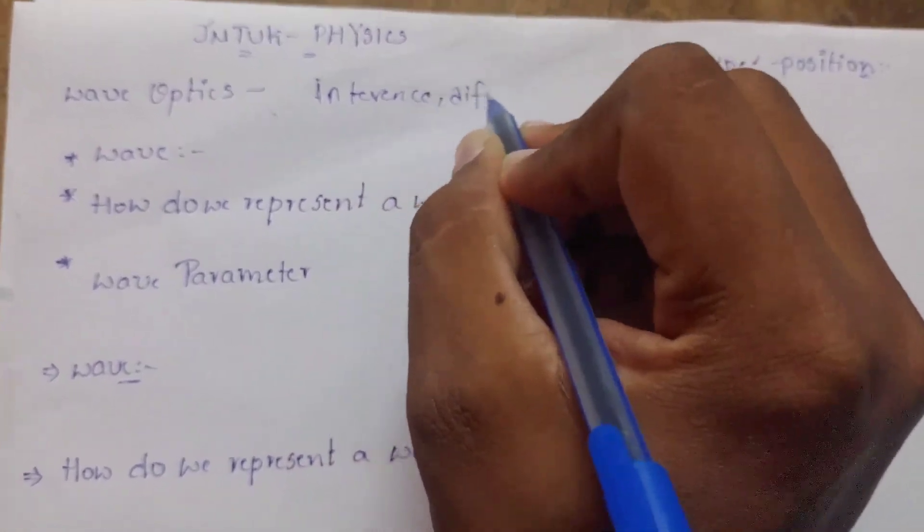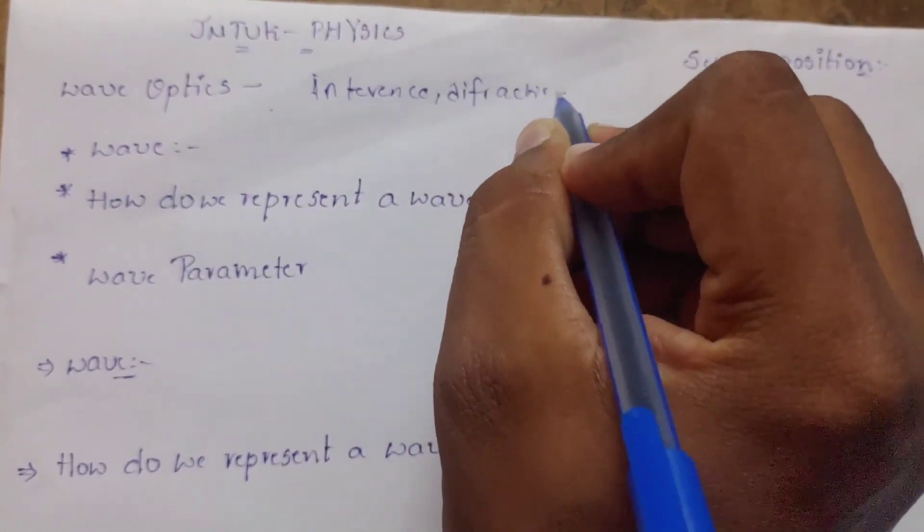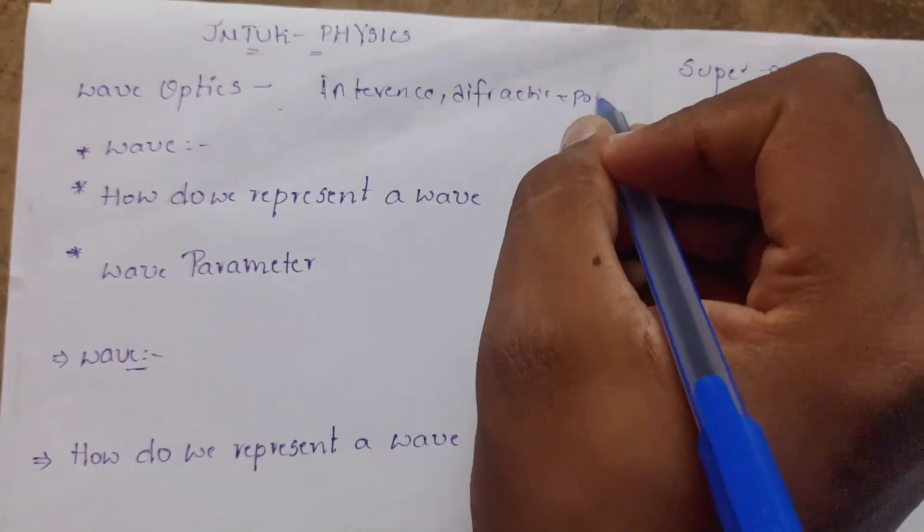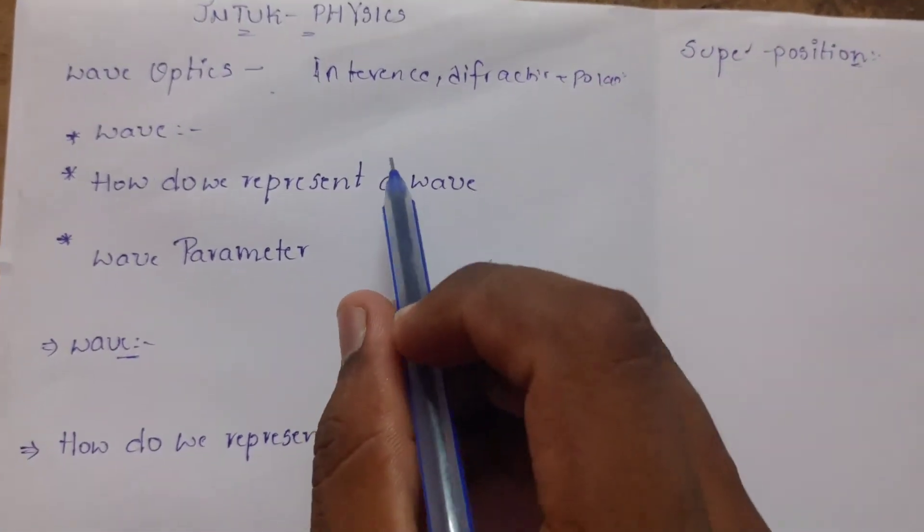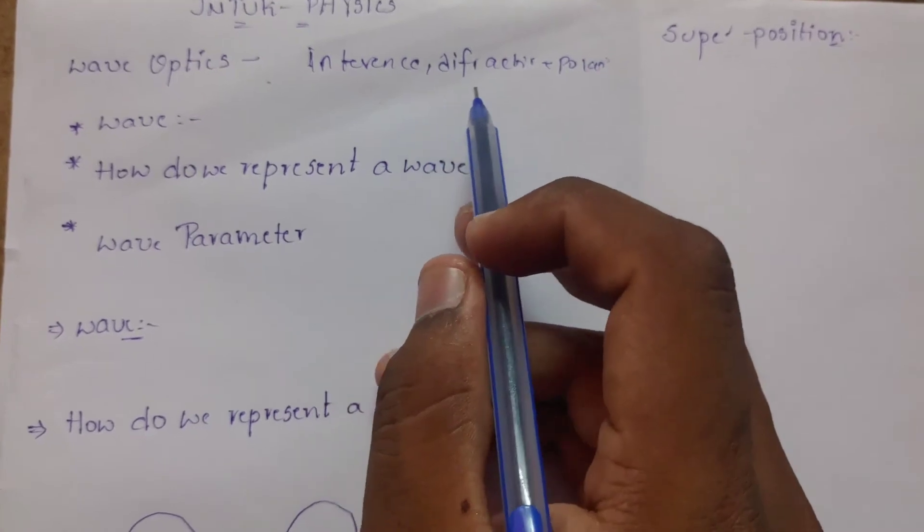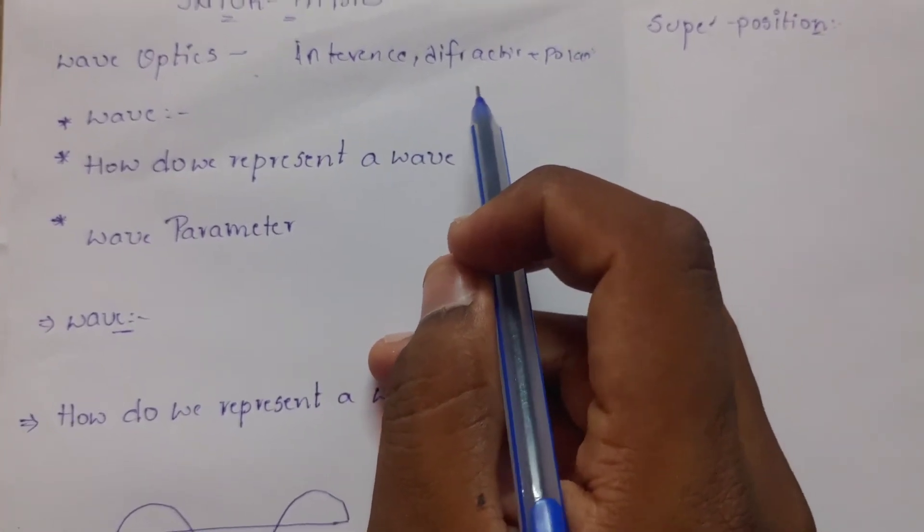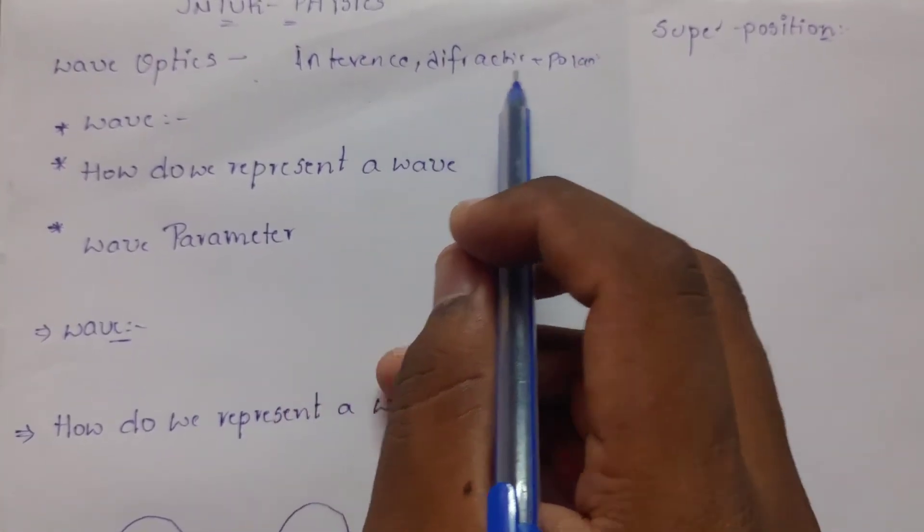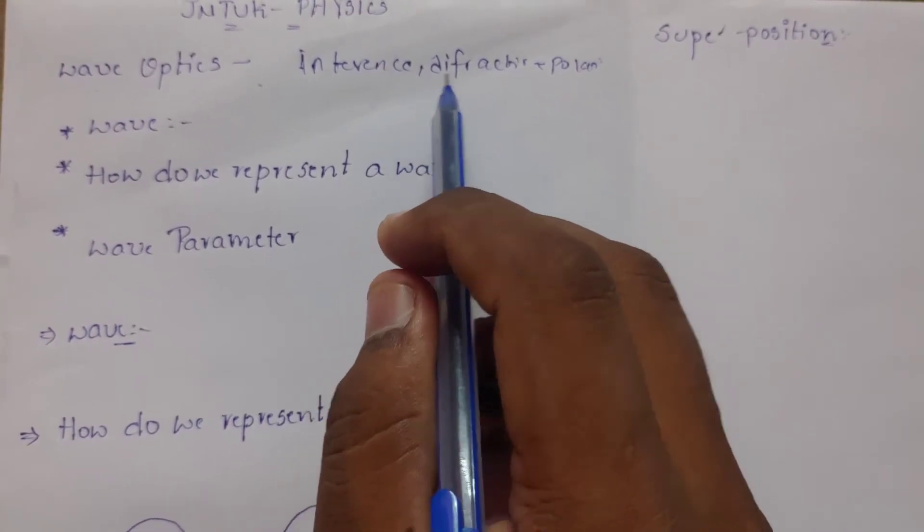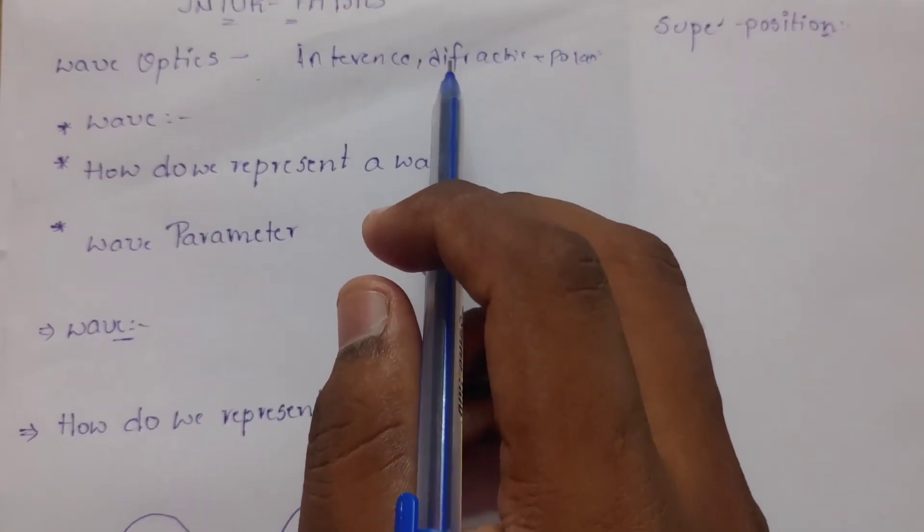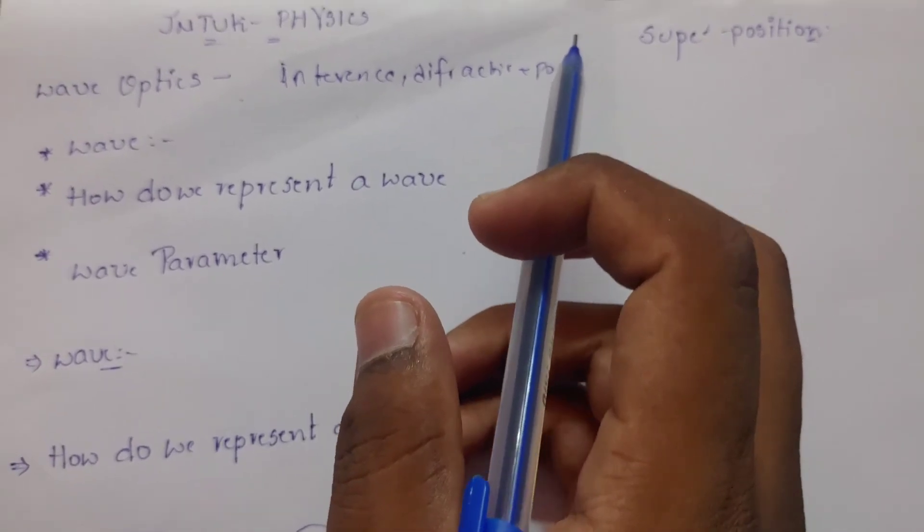Diffraction and polarization - here light operates in wave form. A wave form exhibits properties like interference, diffraction, and polarization. These are the wave properties in the area of optics.